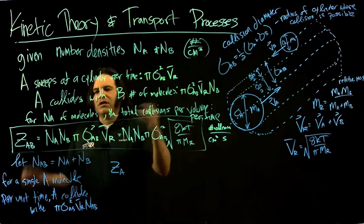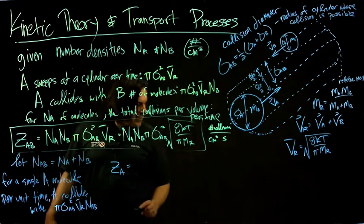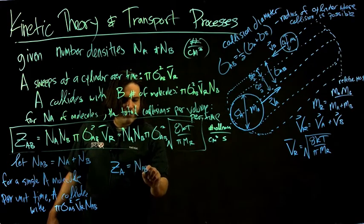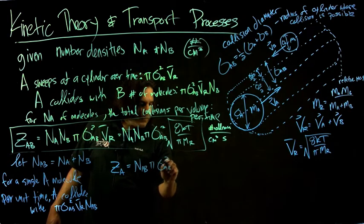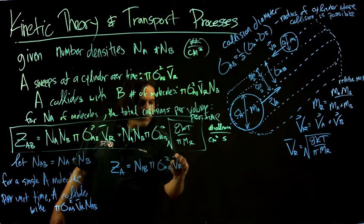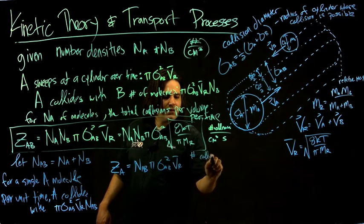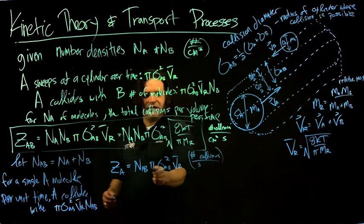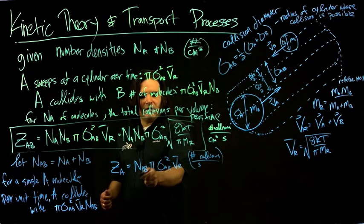Z_A would be the total number density times the collision cross-section times the relative velocity. This is just number per second—number of collisions per second, not per volume—because the volume units cancel out: this is volume per time and this is number density.